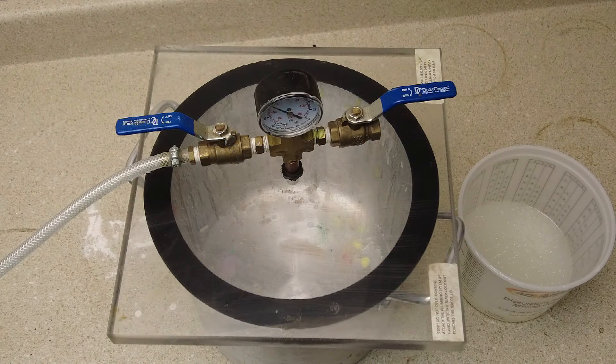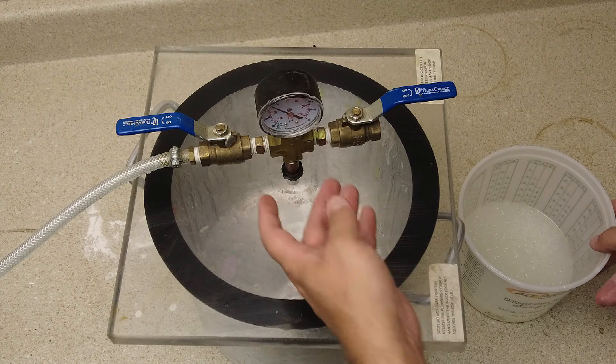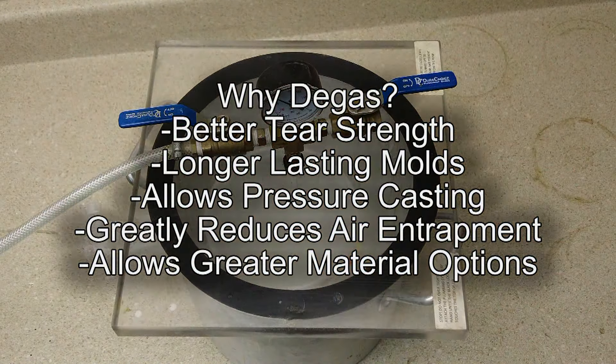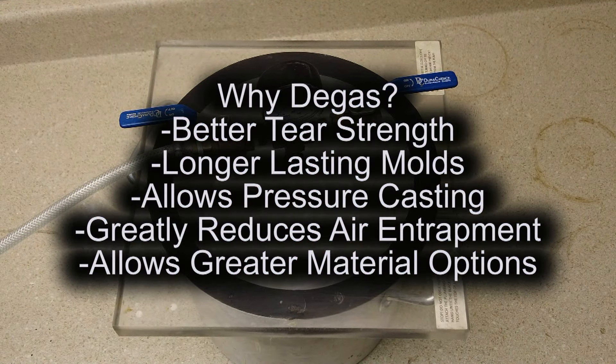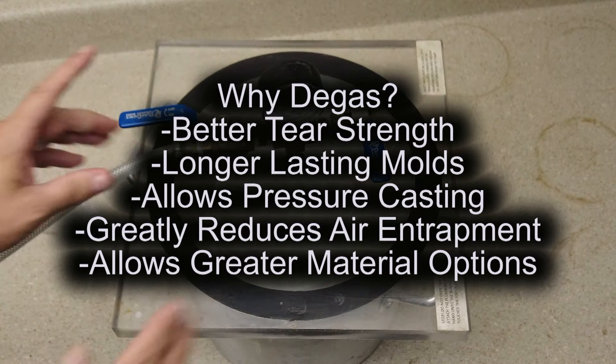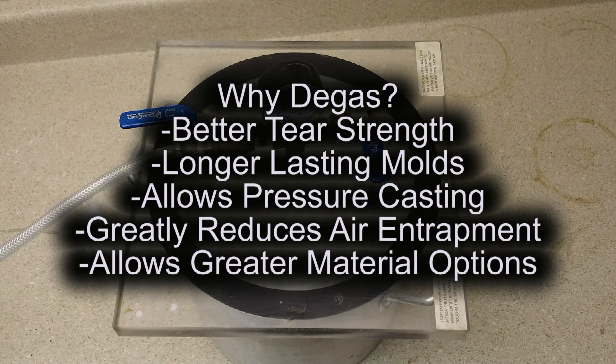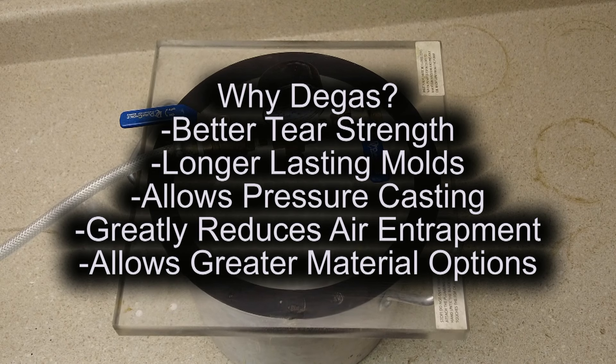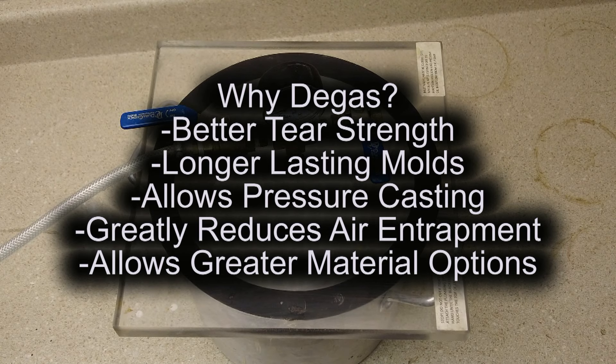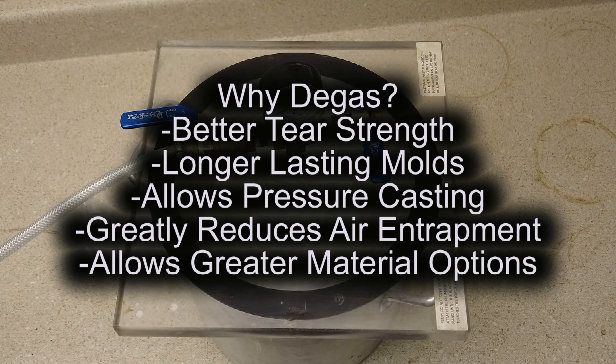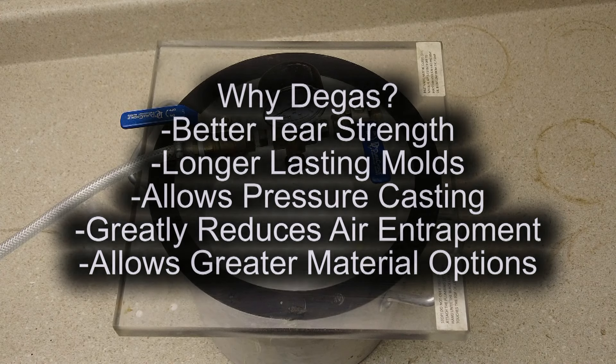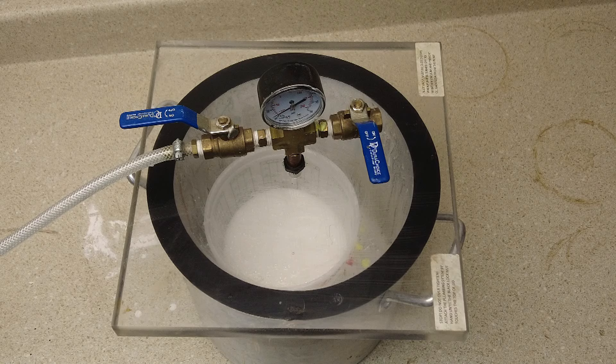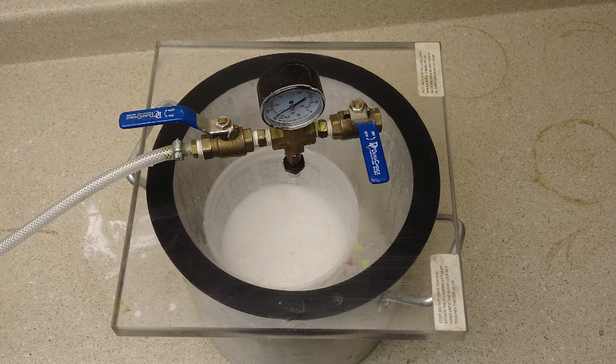Now I don't mean this as a scare tactic to get you to run out and buy a vacuum chamber, but it is very important to know what exactly you're getting out of a good vacuum setup. So why degass? You're going to get better tear strength, longer lasting molds, molds that allow for pressure casting, and of course greatly reducing air entrapment when you're pouring silicone. But another thing that's really important and is often overlooked is this opens you up to a lot of better silicones with higher physical properties.